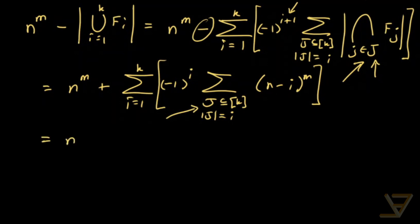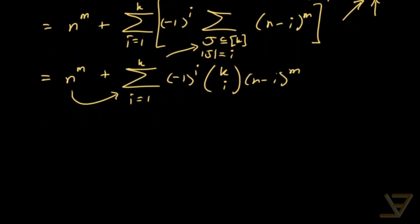And since the number of elements in this sum is k choose i, we get that this is equal to n to the power of m plus the sum of i equals to 1 through k of negative 1 to the i, k choose i times n minus i to the m. And after that...